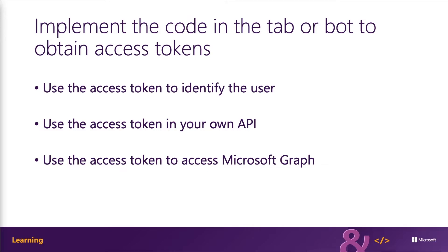The token you get back from Microsoft Teams includes a few useful properties. You'll have the name of the current user, like the display name. You'll have the preferred username, which is the user's UPN or email address. There's an OID property, which is the unique object ID of the user — this should be used to identify the user in your back-end system, as the username and preferred username can be changed by the user or an administrator, but the OID will never change. The TID is the unique tenant ID that the user belongs to.